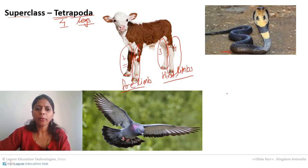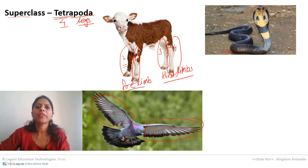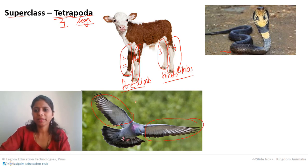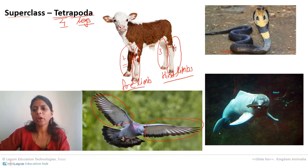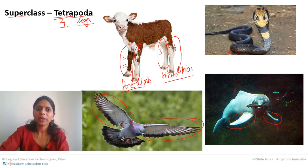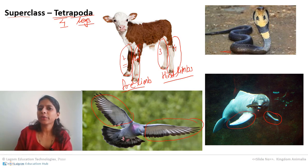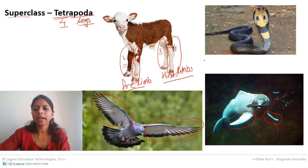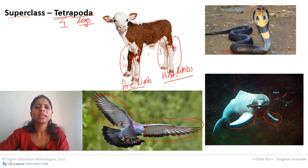Other animals included in Tetrapoda are birds. In the case of birds, their forelimbs are modified into wings for the purpose of flying. Another example is the dolphin — its forelimbs are modified for swimming. Basically, according to the function and evolution of the animal, the limbs are modified. In many aquatic tetrapods, the hind limbs are absent, as they were removed during evolution — just like with snakes.